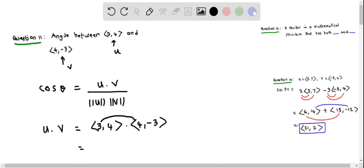So 3 times 4 is 12, and 4 times -3 is -12. Therefore, this becomes 12 minus 12, which gives 0.